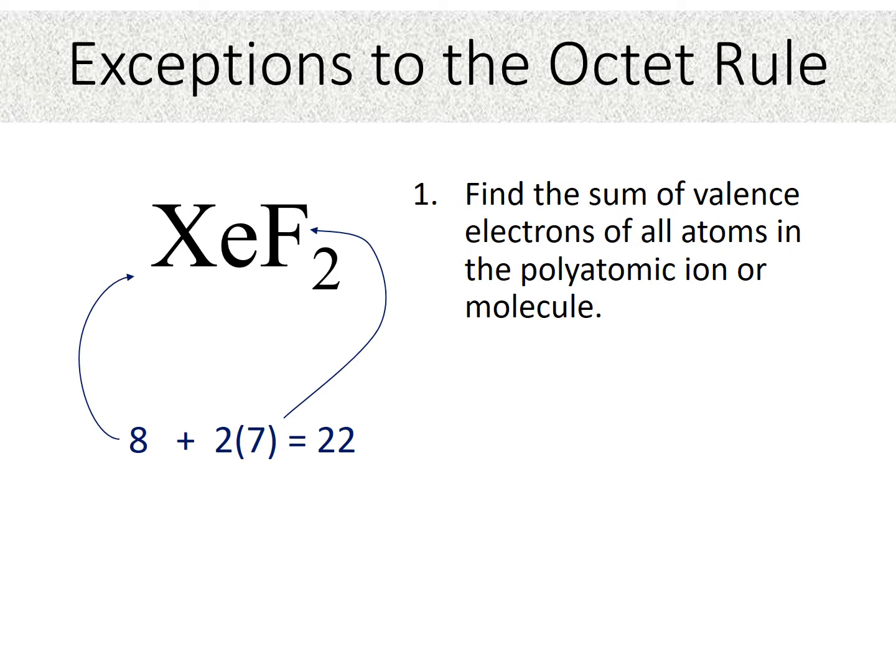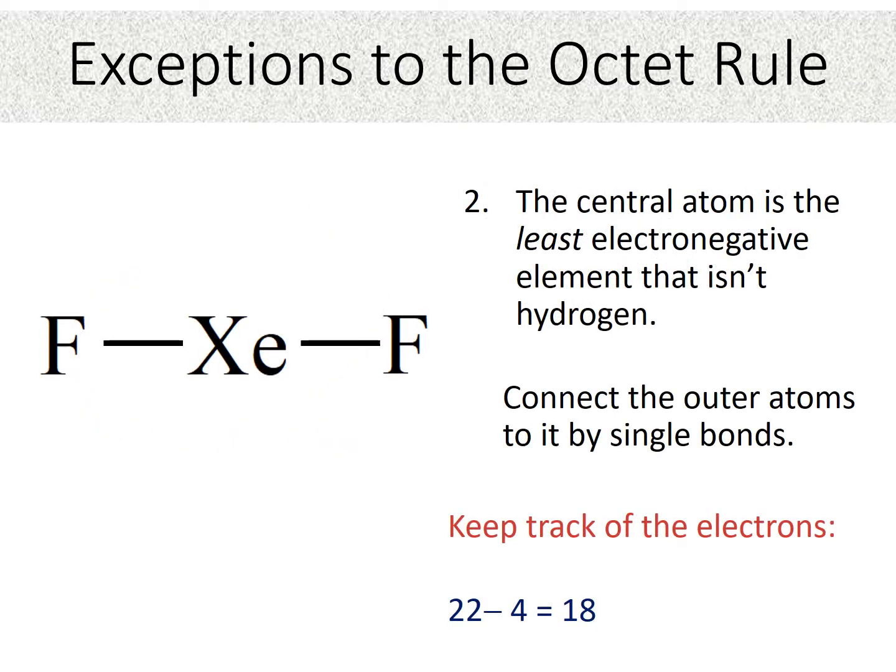In this structure, we have xenon and two fluorine atoms. So, again, the first thing that we need to do is sum up the valence electrons. So, in this case, we would have 22 valence electrons. Then we would subtract out the electrons as we use them. So, remember, it goes in this order: bonding, peripheral, central. So, here we have xenon as the central atom and fluorine are the peripheral atoms. We would connect them together with single bonds. Each bond, we're using two electrons. So that's a total of four electrons in the bond. So we would subtract out four electrons. That gives us 18 electrons to work with.